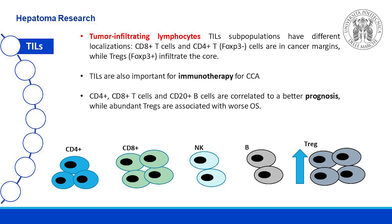Tumor-infiltrating lymphocytes consist mainly of CD8 and CD4 T lymphocytes, but also of NK natural killer and B lymphocytes. In cholangiocarcinoma, there is a reduction of cytotoxic T cells and NK natural killers, and an increase of Tregs. TIL subpopulations have different localization: CD8 T cells and CD4 FOXP3-negative cells are in cancer margins, while Tregs, FOXP3-positive, infiltrate the core.